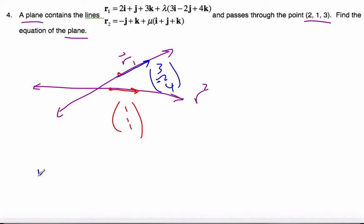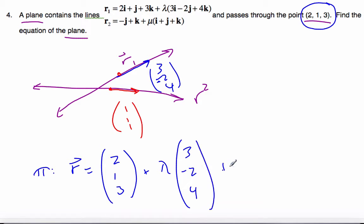All I need is a point. So my plane will be R equals my point. I'm going to choose this point here, 2, 1, 3, plus some parameter. I'll use lambda. Lambda will be this direction vector, 3, minus 2, 4, plus mu, this direction here is 1, 1, 1.